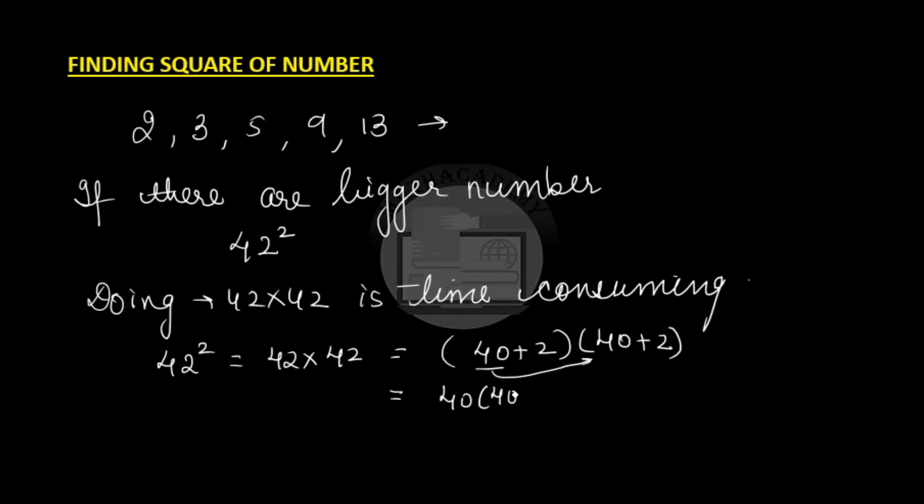So, 40 times 40 plus 2, and distributing this plus 2 over this bracket again. So, plus 2 times 40 plus 2.